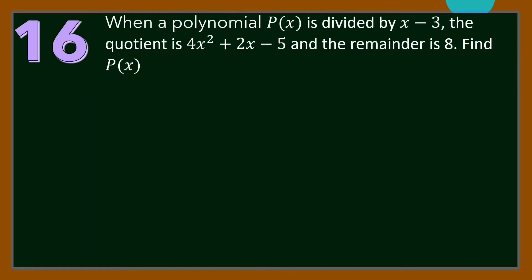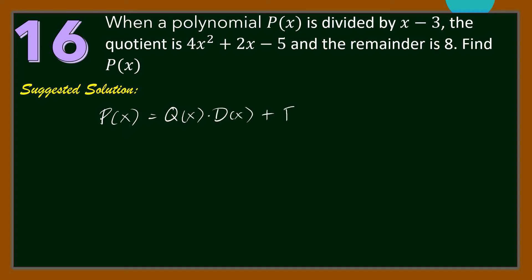Number 16. When a polynomial P(x) is divided by (x − 3), the quotient is 4x² + 2x − 5 and the remainder is 8. Find P(x). Here is our solution. We know that P(x) = Q(x) · D(x) + R(x), where P(x) is the dividend, Q(x) is the quotient, D(x) is the divisor, and R(x) is the remainder.